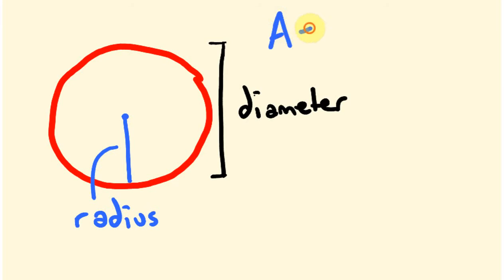The way that you work out the area of a circle is as follows: the area of a circle equals pi r squared. Pi is a special constant used to work out circles, generally equal to about 3.1415. We're going to be multiplying that by the radius squared — the radius times itself. So whatever the radius is, times itself, then times pi.